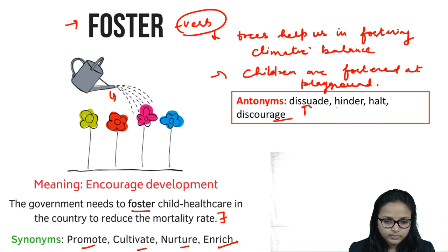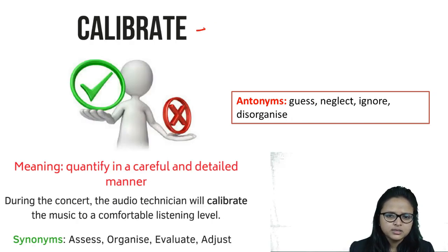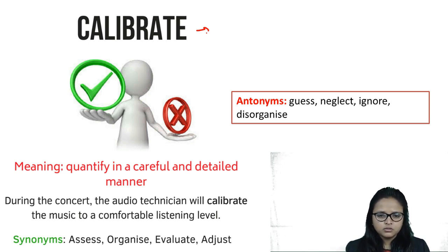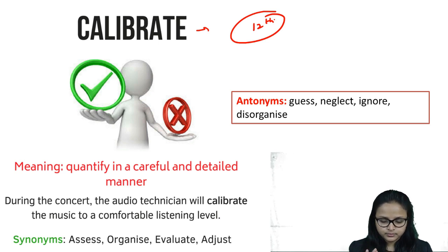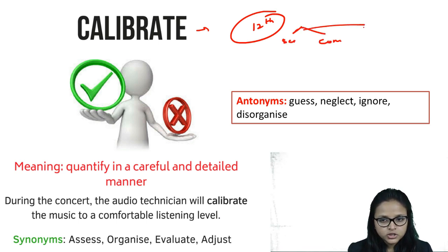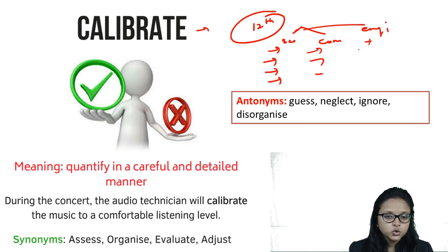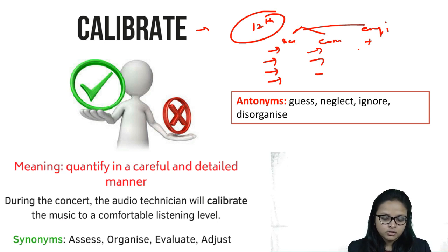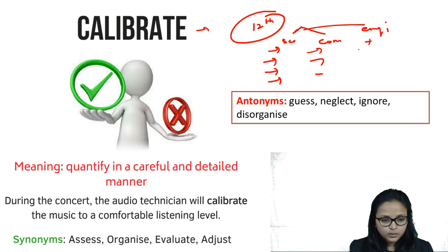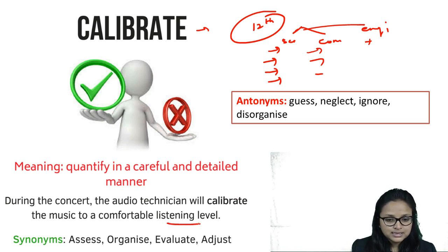The next word is 'calibrate.' Calibrate means to think about the pros and cons of something before doing it. For example, after finishing twelfth standard you consider whether to go for science, commerce, or engineering — you check all the possibilities and growth opportunities in each option before choosing. That process of thinking carefully about every aspect of available options is called calibrating. Example: 'During the concert, the audio technician will calibrate the music to a comfortable listening level' — meaning he will adjust it.